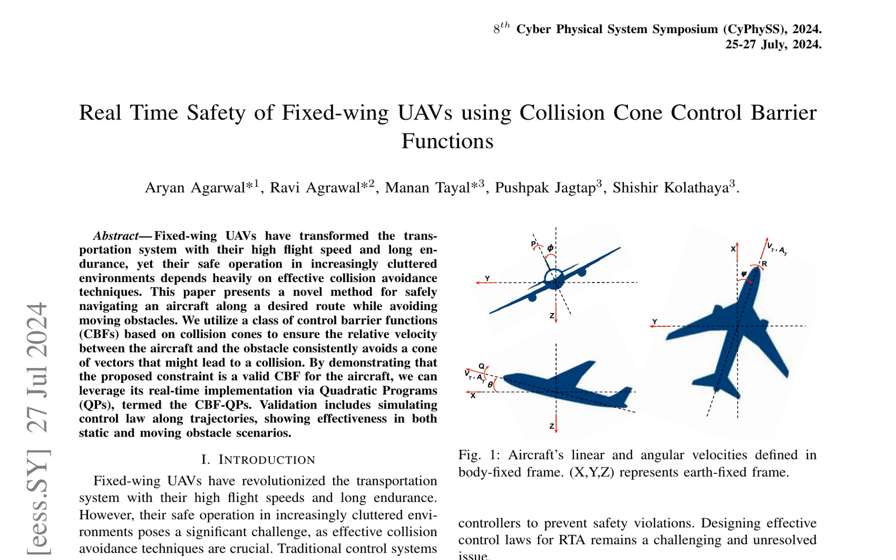Fixed-wing unmanned aerial vehicles (UAVs) have revolutionized transportation with their high flight speeds and long endurance. However, ensuring their safe operation in cluttered environments remains a significant challenge. Traditional control systems for safety-critical applications ideally provide guarantees of safe operation under specified conditions. Runtime Assurance (RTA) systems have been developed as supplementary modules for aircraft flight controllers to prevent safety violations, but designing effective control laws for RTA remains an unresolved issue.